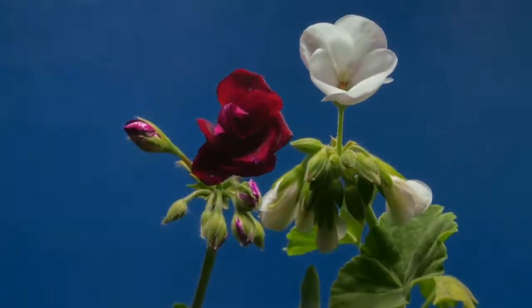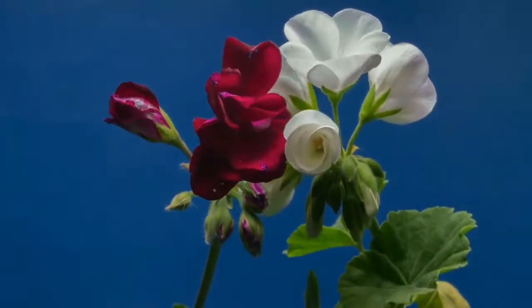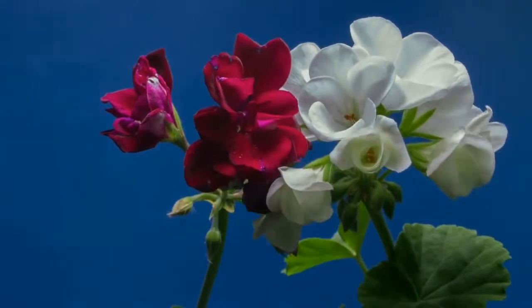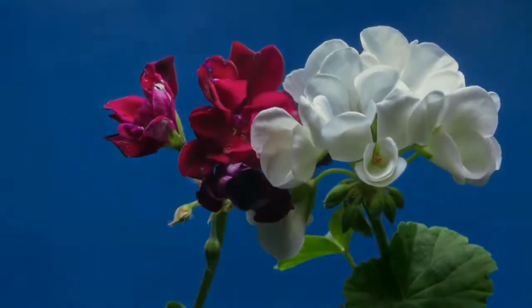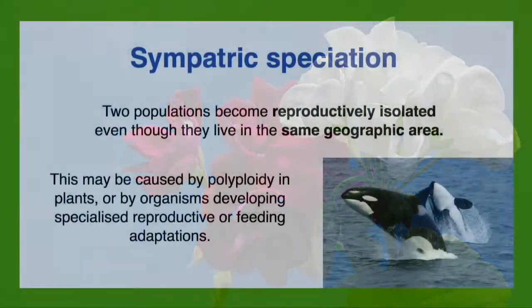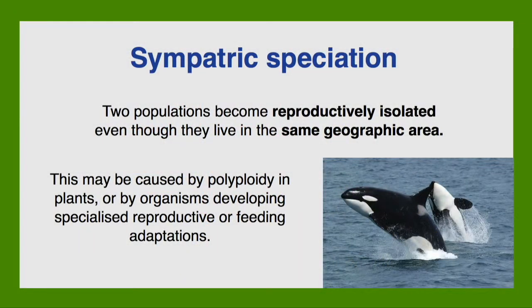The original populations have very specialised diets or find themselves unable to interbreed. In cases like this, the populations can be reproductively isolated even when they live in the same area. We call this sympatric speciation. This type of speciation mainly occurs in plants, which have specialised reproductive structures. It is rarely observed in animals, but there are a few documented cases such as migratory and resident orchid populations refusing to mate with each other.